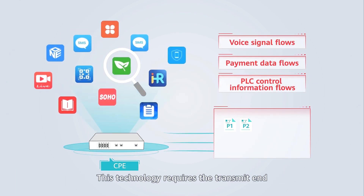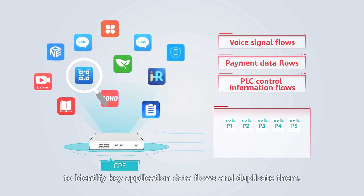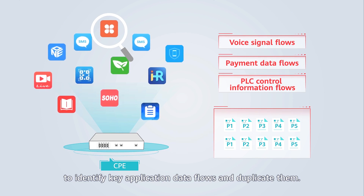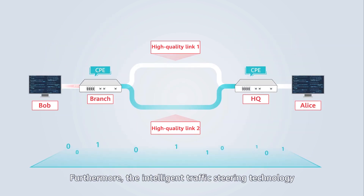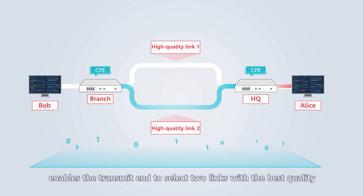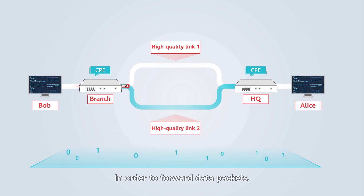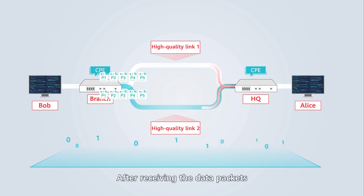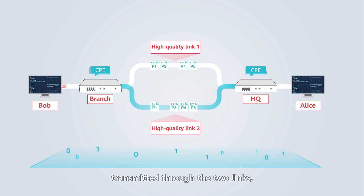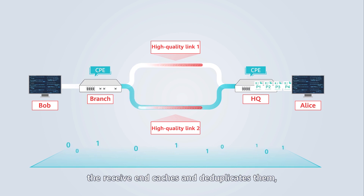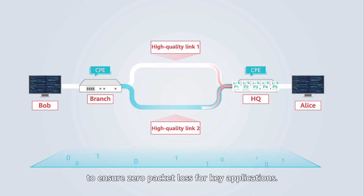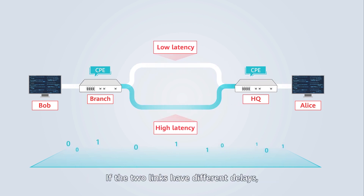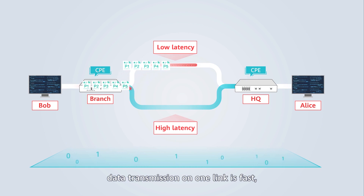This technology requires the transmit end to identify key application data flows and duplicate them. Furthermore, the intelligent traffic steering technology enables the transmit end to select two links with the best quality in order to forward data packets. After receiving the data packets transmitted through the two links, the receive end caches and deduplicates them, thereby restoring the original data flows to ensure zero packet loss for key applications.